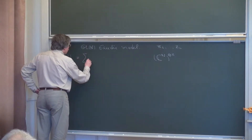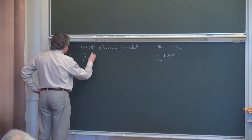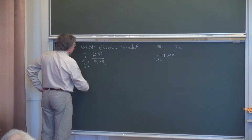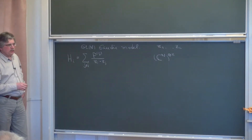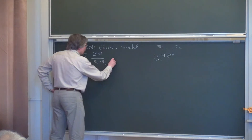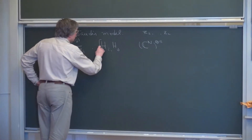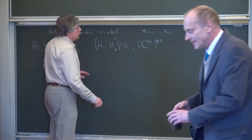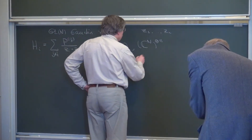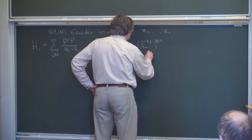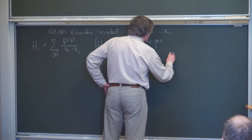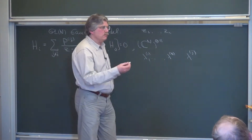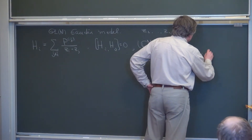I will consider two cases. The simpler case: the space of states will initially be just the tensor product of m copies of the vector representation of the group, so the space of states will be just C^n tensored m times. The Gaudin Hamiltonians in this case are the famous operators which are like: you take P, which is the flip of the i-th and j-th tensor factors, summed appropriately. This is a well-known commutative family.